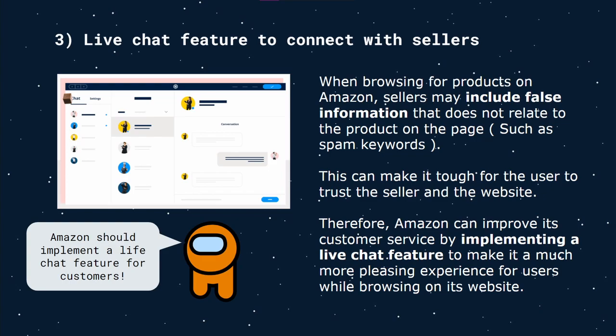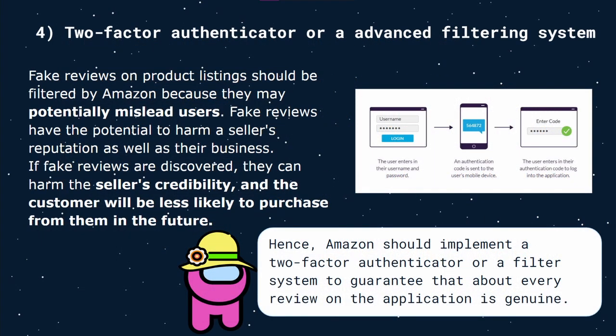Thirdly, Amazon should add a live chat feature to allow buyers to connect directly with sellers. When browsing products, sellers may include false information on a product page, making it tough for users to trust the seller. A live chat feature would improve customer service and provide a more pleasing browsing experience. Finally, Amazon may consider implementing a two-factor authenticator or an advanced filtering system to ensure there are no fake reviews or fake sellers on the platform.